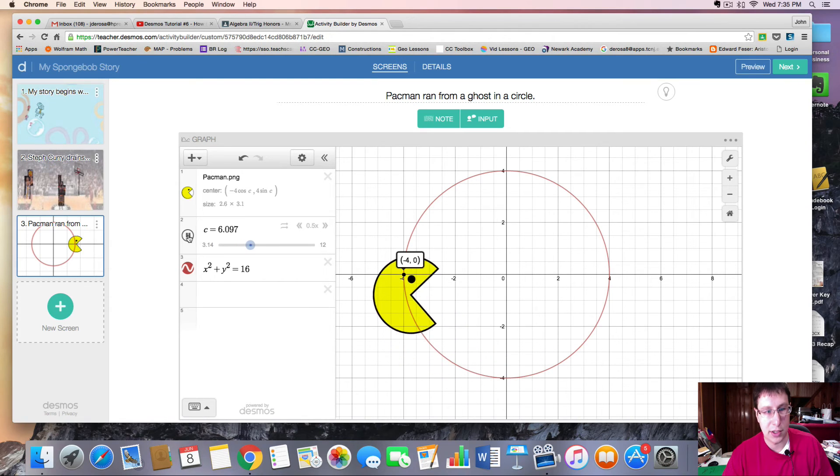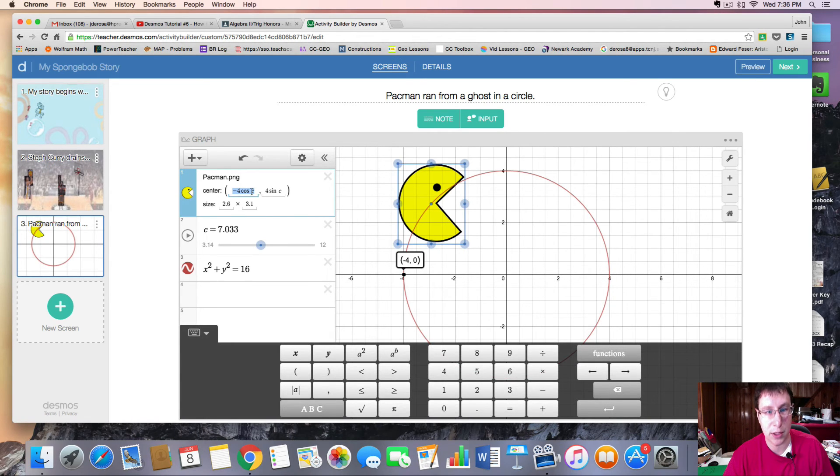One last thing. If you want Pac-Man to move at a different speed, you can change the slider. But as you saw, I had a ghost who was moving at a different speed as well. So if you want to have two things, and one of them is moving at a different speed, you're going to need to mess with the period of the function.